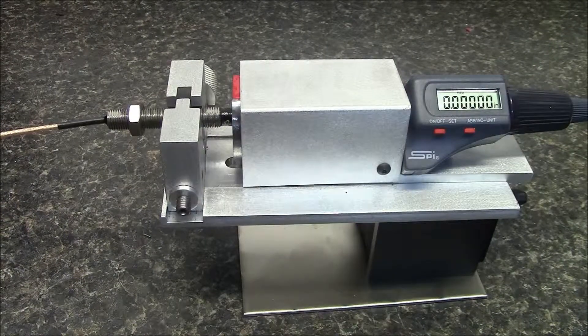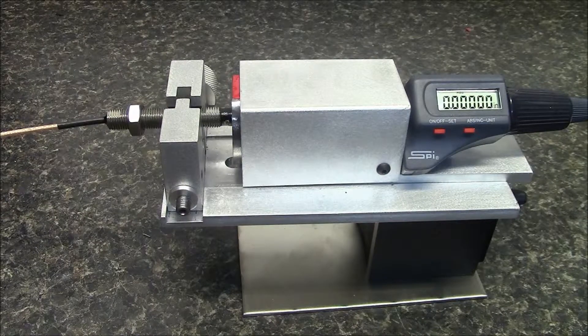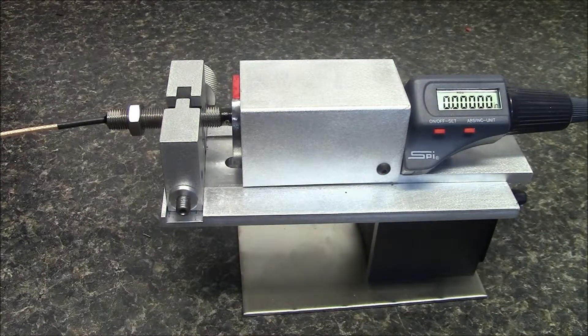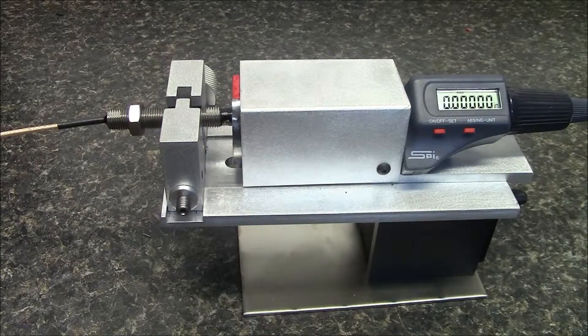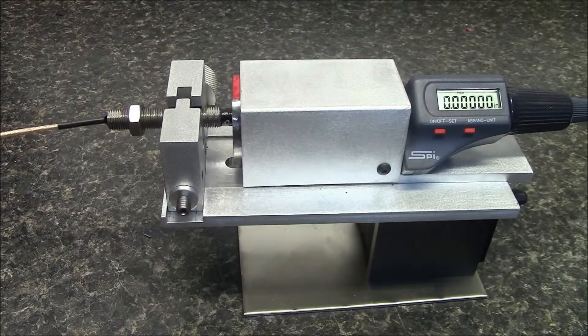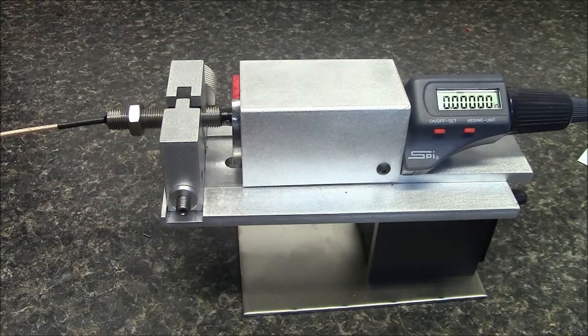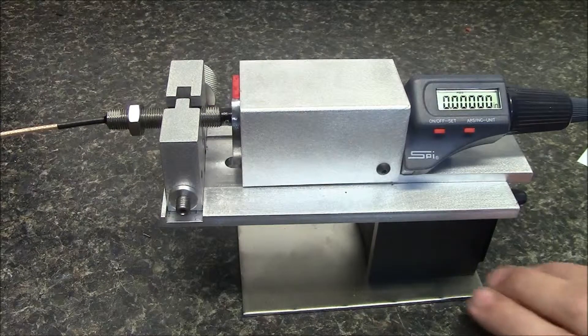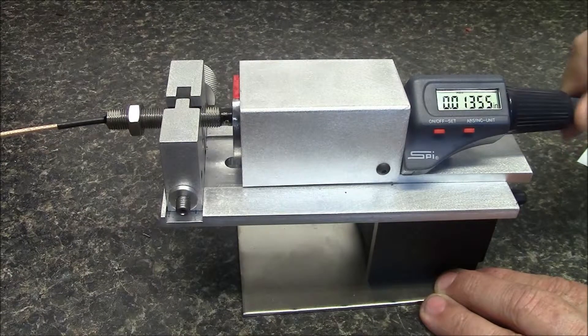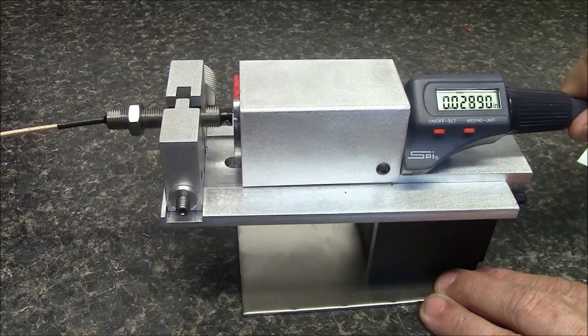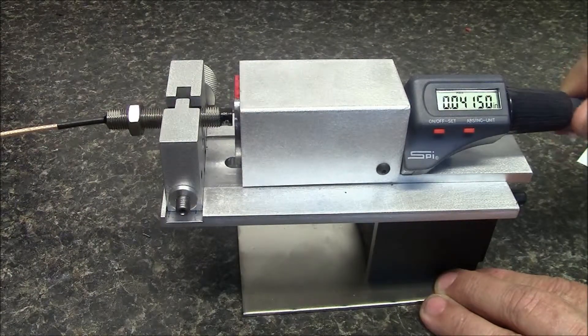Mechanical run-out is caused by the surface of the target material not staying perfectly parallel to the surface of the eddy probe throughout the entire measurement process. By mounting the target material on linear bearings, we keep the surface of the target material and eddy probe perfectly parallel throughout the entire measurement process.